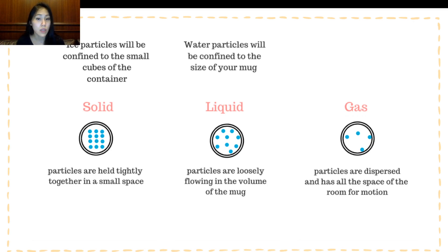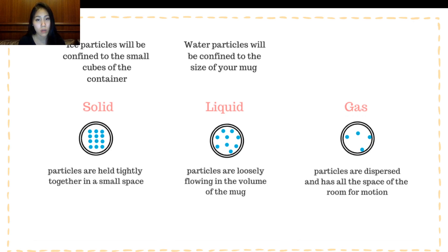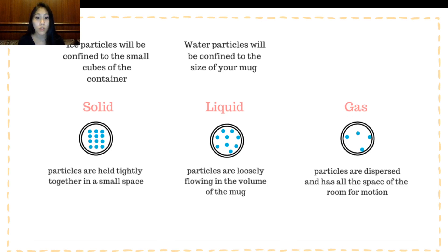In a liquid state, water is a lot more flowing. We know that the attractive forces happen to be not as strong, so that means that the particles are not as tightly packed together. This means that it will just be confined to whatever container it's given. So if you pour water into a cup, the water will take the shape of the cup. If you pour water into a flat pan that's a square pan, then it's going to take up the square pan space.